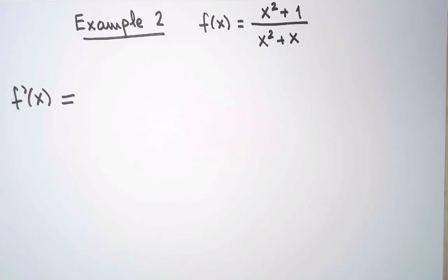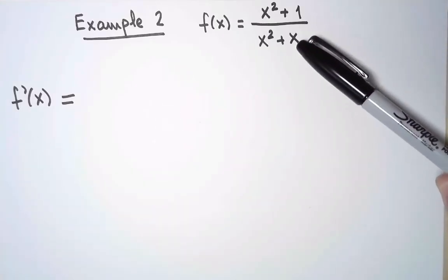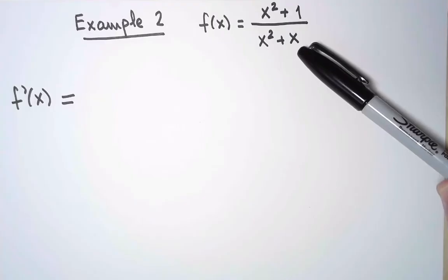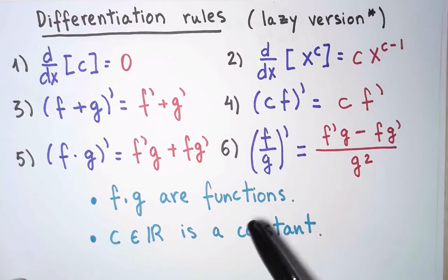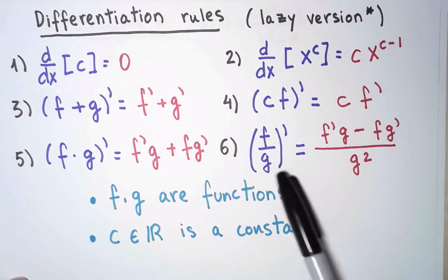For my second example, I want to compute the derivative of this function. It's a rational function, a quotient of polynomials. I can use the quotient rule directly.